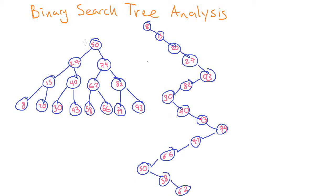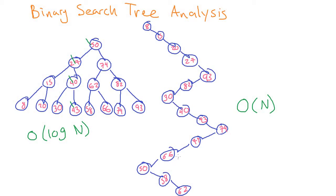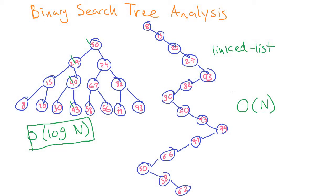But if we tried to do a search on this, it's not going to be as efficient. In the balanced tree, we do at most 4 levels because the height is 4. This unbalanced tree has a height equal to the number of nodes — 15 nodes, height of 15. So the balanced tree would be O(log N) to search, while this one would be O(N) because we're not narrowing anything down at every step. In fact, this thing is basically the same as a linked list. This is called a degenerate tree, and it gives us O(N) performance.